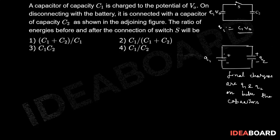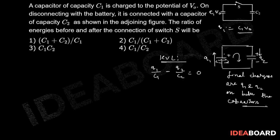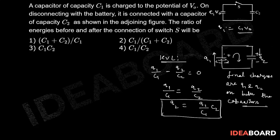We apply KVL — Kirchhoff's Voltage Law. Starting from the negative terminal of C1, crossing from negative to positive gives Q1/C1. Then going from positive to negative across C2 gives a potential drop, so Q2/C2 = 0. This gives us Q1/C1 = Q2/C2, and therefore Q2 = (Q1/C1)·C2.